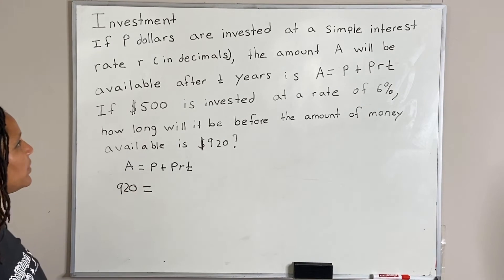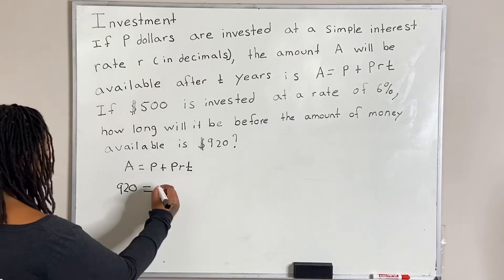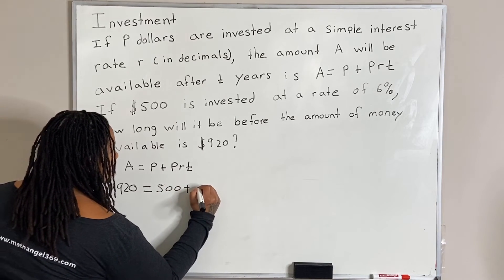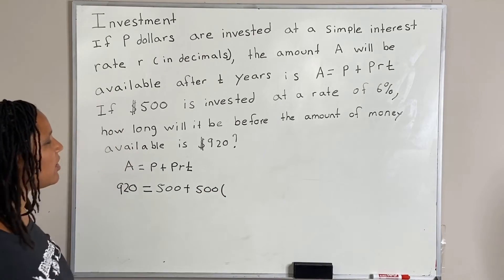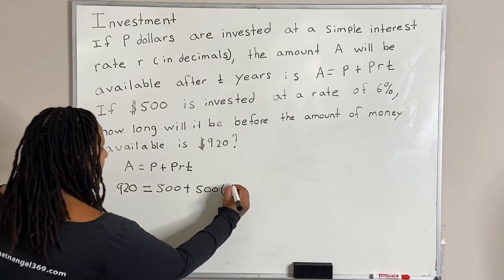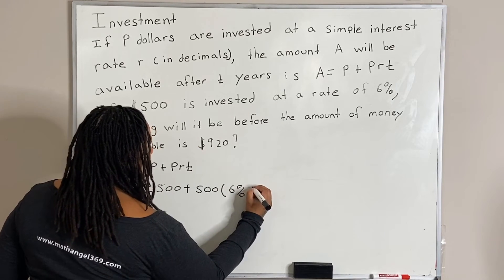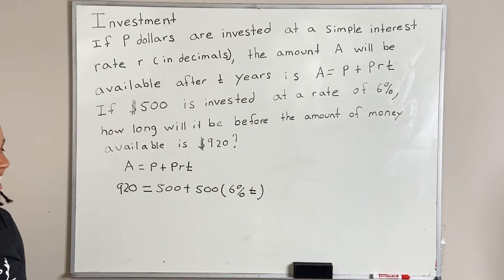And we are also given P, which is 500. So I'm going to plug in 500 for P. And we are given R, which is 6%. So I'm going to plug in 6%. And what we want to find is T. So now we're just computing and solving for T.